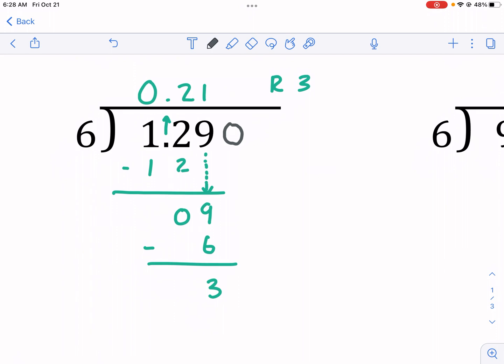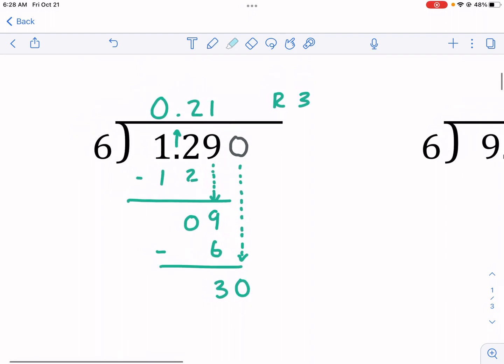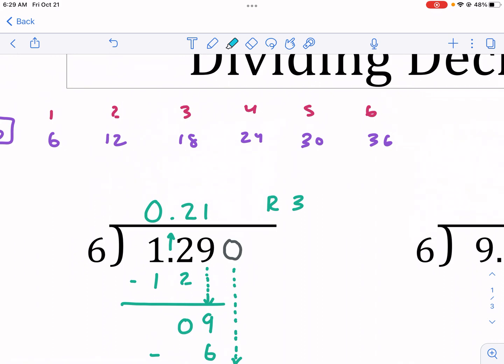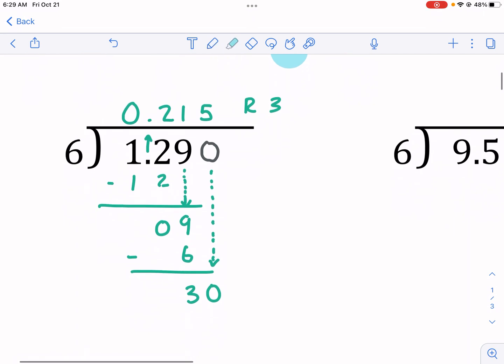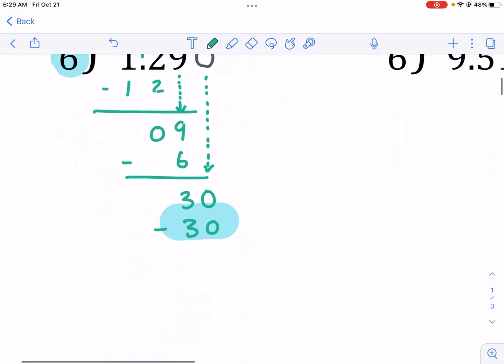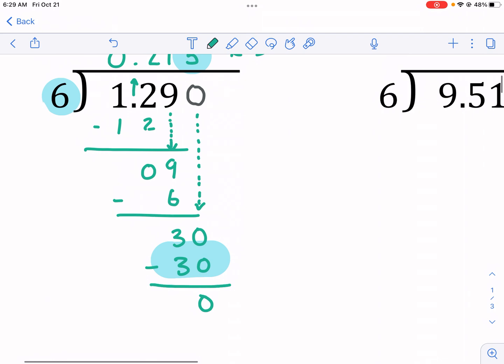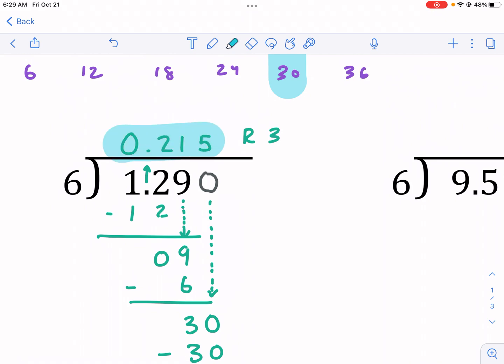Remember how we dropped down that 9? Well, there's nothing left to drop down or is there. We can make this 1.290 without changing the value. So, now what we're going to do instead, instead of dropping down nothing, we're going to drop down 0. So, we're going to drop down this 0, just like we dropped down the 9 before, and now we have 30. Well, guess what? We can have 6 go into 30. Look up here. 6 times 5 equals 30. So, we're going to put the 5 up here, and then like I said, we're going to multiply 6 times 5 and write that answer right in there. So, I put the 30, I subtract, and now I get 0. Once I get 0, I'm satisfied. I'm good. I don't need to do any more work because 0.215 is going to be my answer.